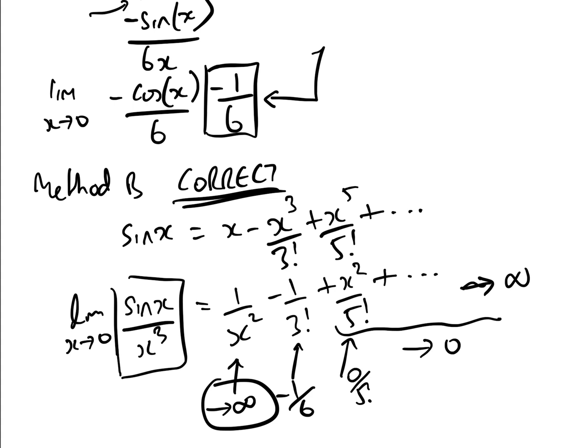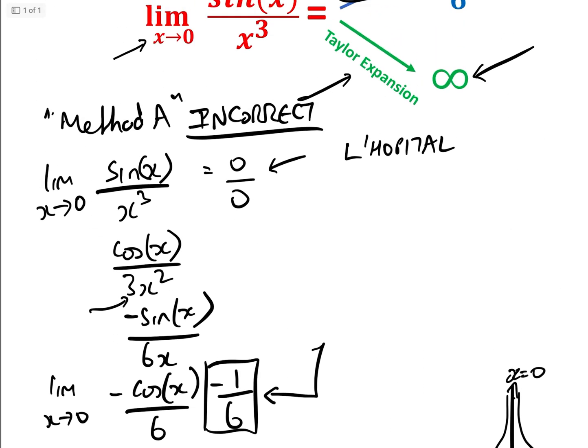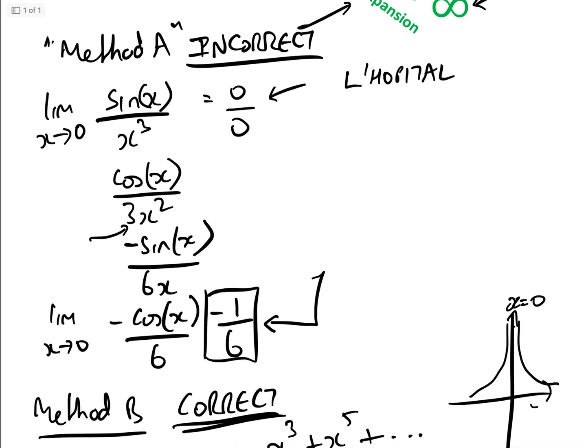The limit of sine x over x cubed as x approaches 0 is infinite. And the graph looks something along the lines of that. There's an asymptote going up at x equals 0 here. So what went wrong on method A? Because at first glance, it looks fine.